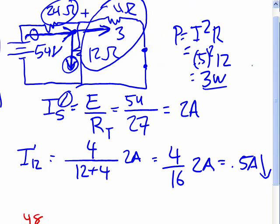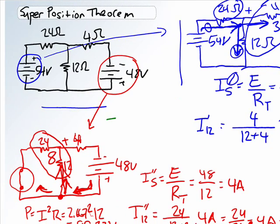Now we've got a point where we've got to unify everything. So the current, the real current, according to the superposition theorem, is the algebraic sum of that induced by the 54 volt source.